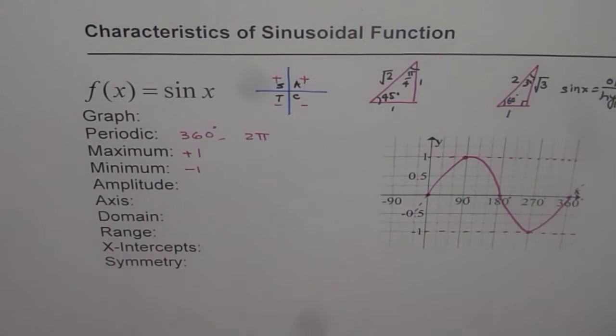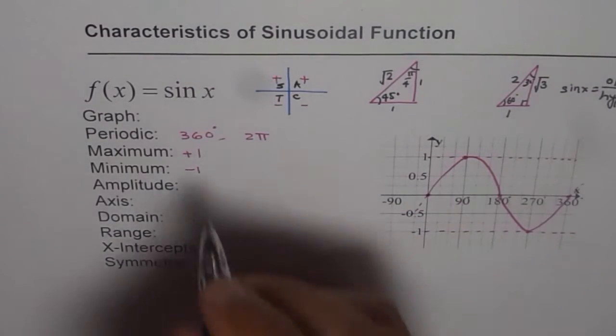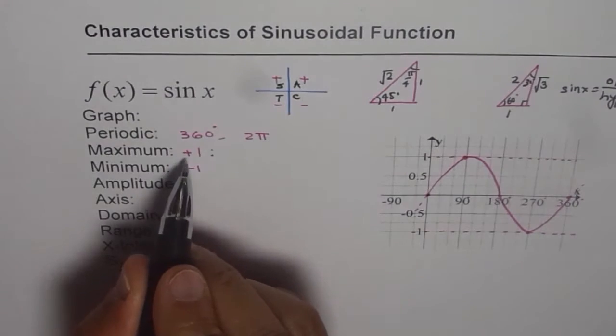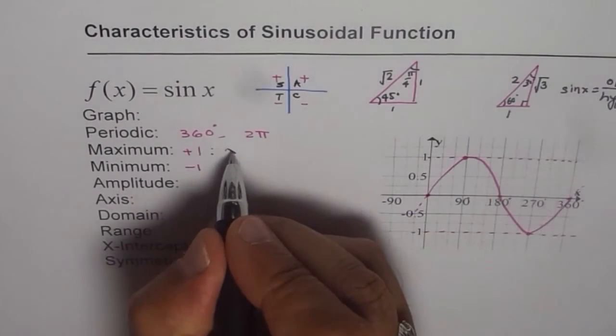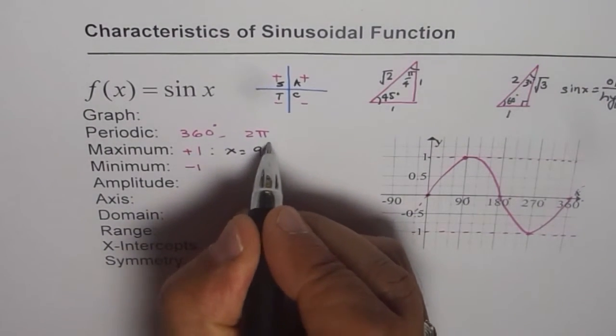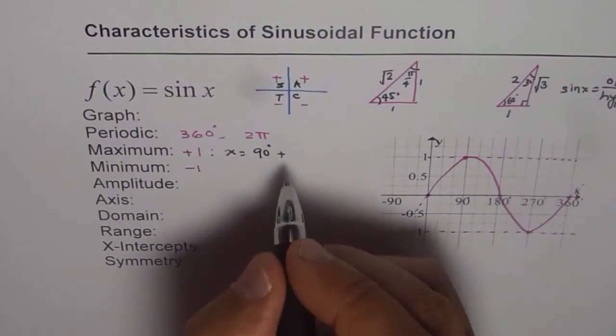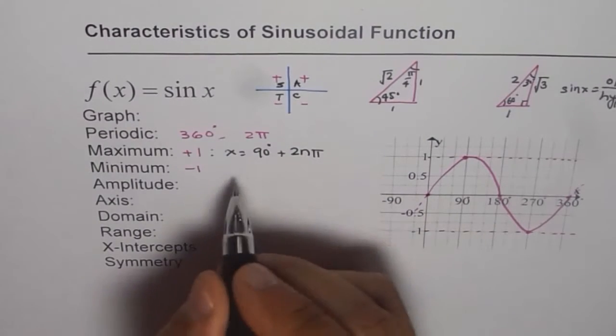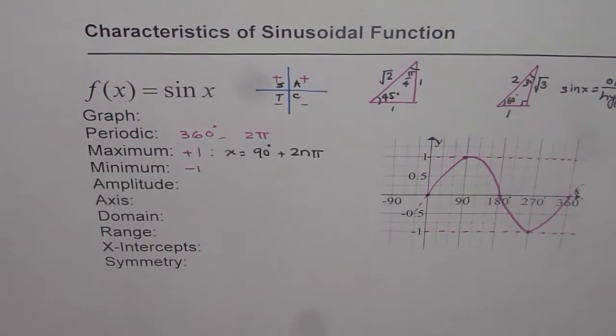Now, when does it have maximum value? Maximum value is at 90. So we can say maximum value is plus 1, of course, at x equals to 90 degrees plus 2π. So every 2π, we can write 2nπ.